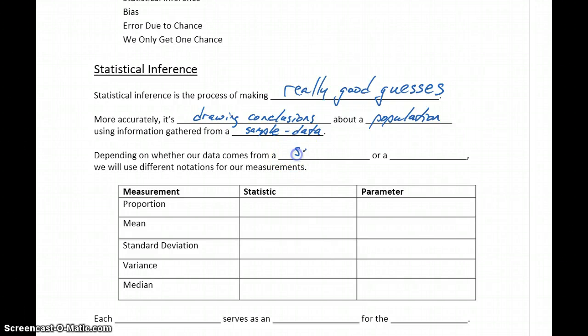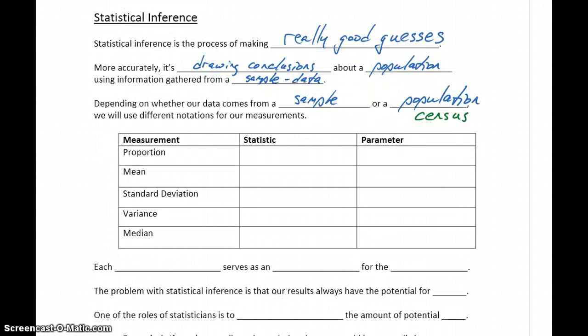Depending on whether our data comes from a sample or a population, and if we were getting data from a population we would do that using a census, we're going to use different notation to indicate the different measurements that we're going to come up with.